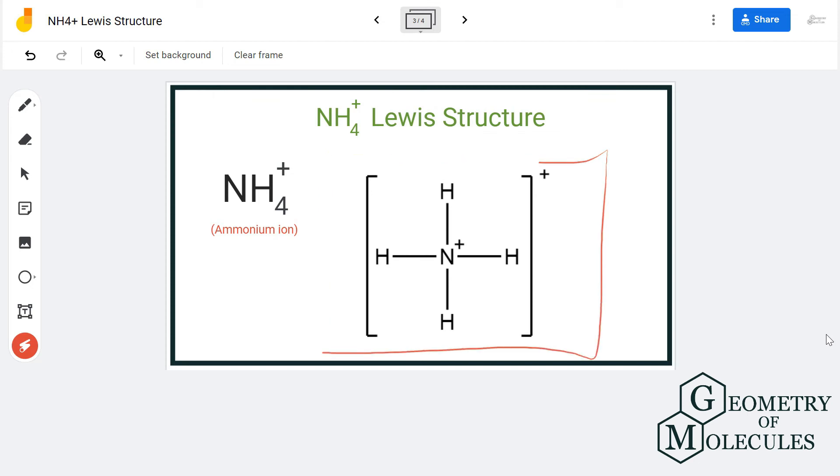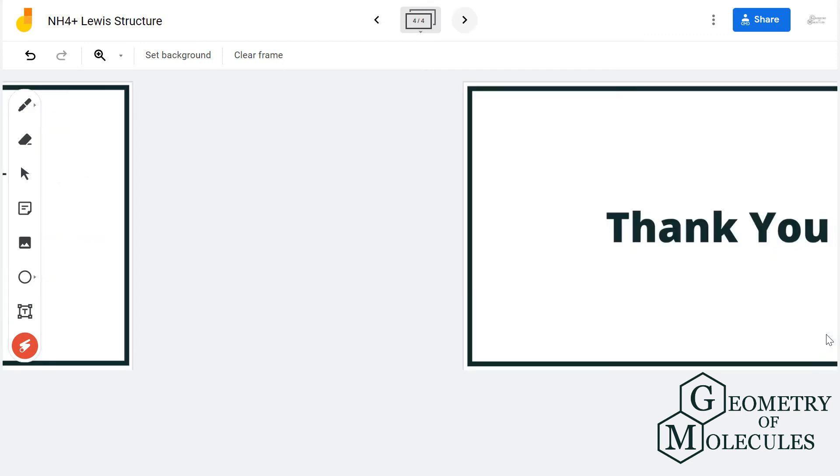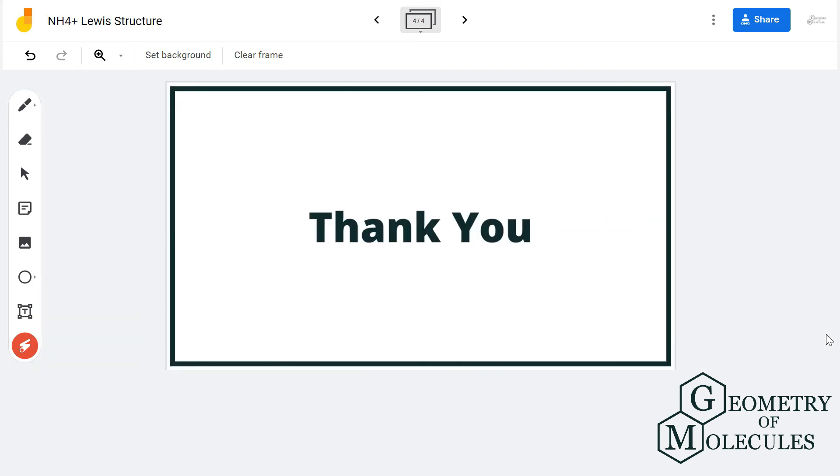This is how you write down the Lewis structure for an ion by putting brackets and putting a charge. So this is the Lewis structure of ammonium ion, and I hope this video helps you to understand it better.